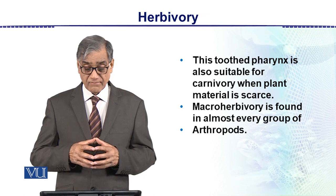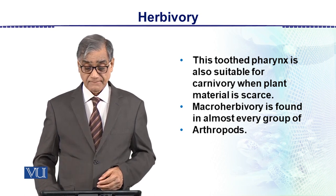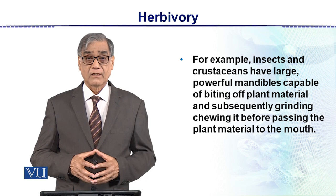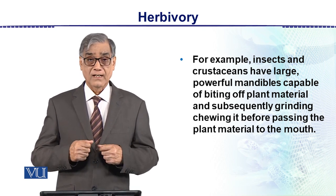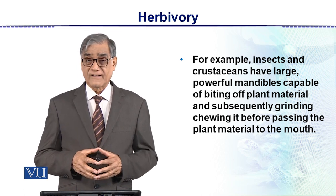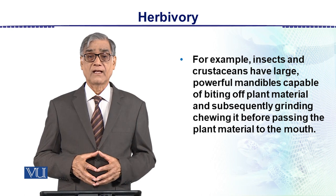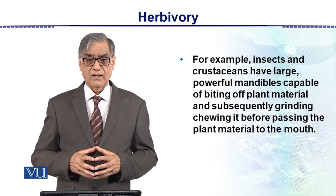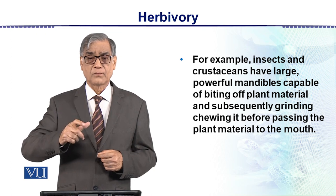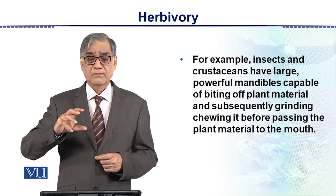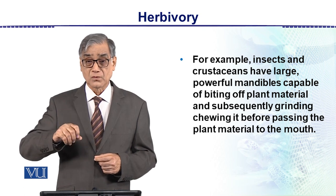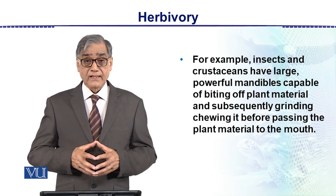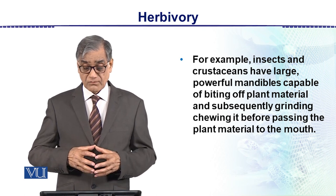Macro-herbivory is found in almost every group of arthropods. Insects and crustaceans have large powerful mandibles capable of biting off plant material. For example, the locust — which belongs to arthropods as an insect — destroys entire crops. You can observe how a locust notches and tears at a leaf, and then grinds and chews it before passing the plant material to the mouth.